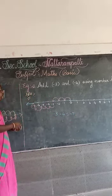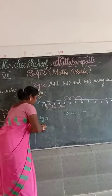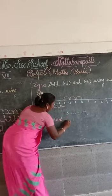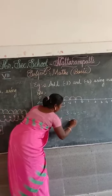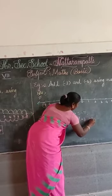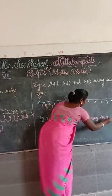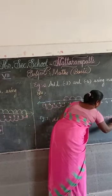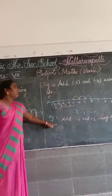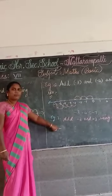Now I will give you a practice problem. Add 2 and minus 3 using the number line — you have to do it yourself. I hope you all understand. If you finish this, send it to the WhatsApp group. Take care. Bye, see you!